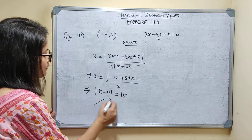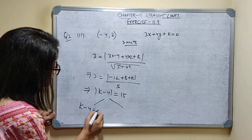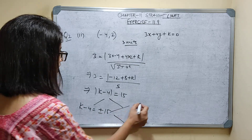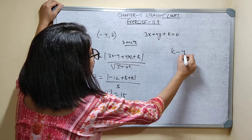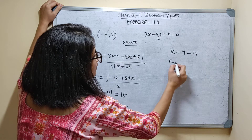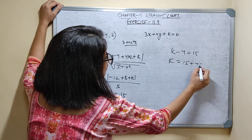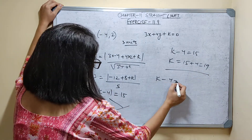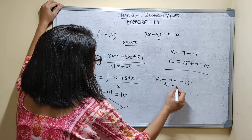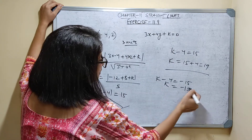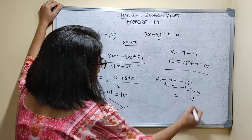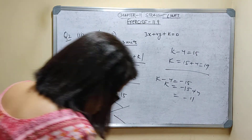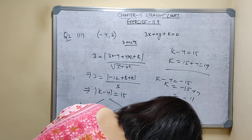Mod of k minus 4 is equal to 15, so 2 cases are possible. k minus 4 is equal to plus minus 15. Case 1: k minus 4 equals 15, so k equals 15 plus 4, that is 19. Case 2: k minus 4 equals minus 15, so k equals minus 15 plus 4, that is minus 11. So the values are 19 and minus 11.